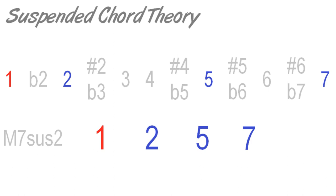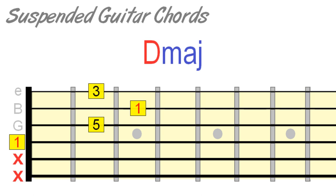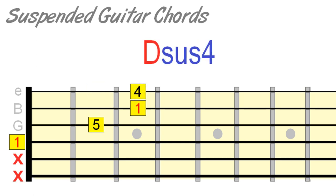On guitar, the most common suspended fourth shapes can be formed by altering familiar major and minor shapes. All we do is move the third of a major chord up one fret position to get a sus4.